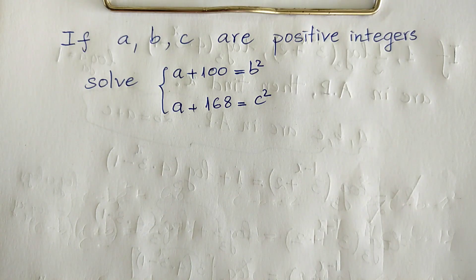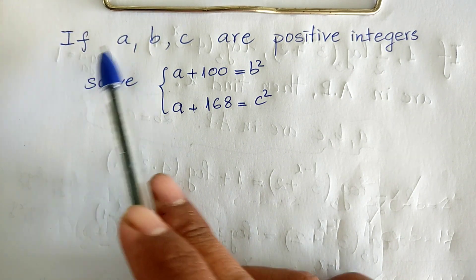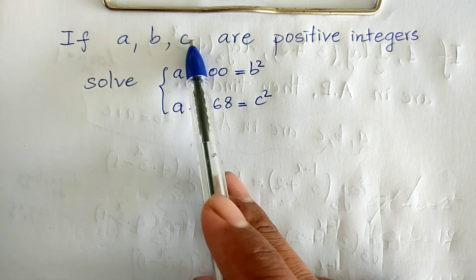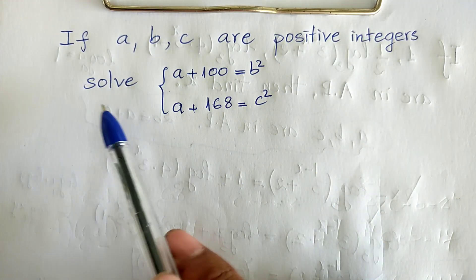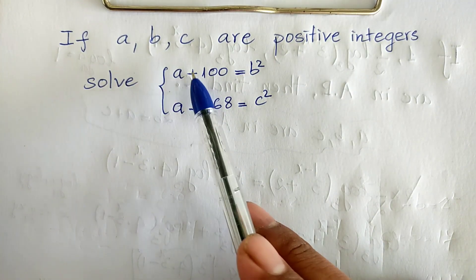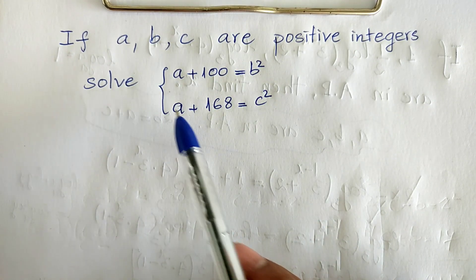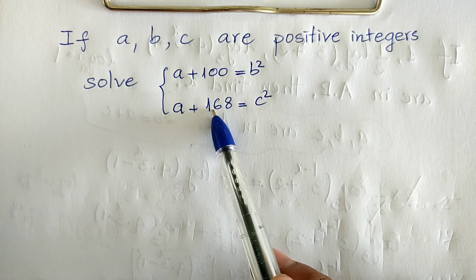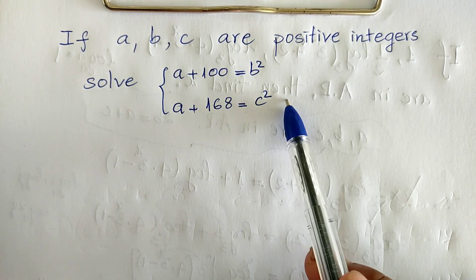Hello everyone, welcome to my YouTube channel. Today I have one exercise on paper: if a, b, c are positive integers, a plus 100 equals b squared, a plus 168 equals c squared.